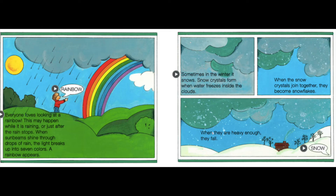Sometimes in the winter it snows. Snow crystals form when water freezes inside the clouds. When the snow crystals join together, they become snowflakes. When they are heavy enough, they fall.